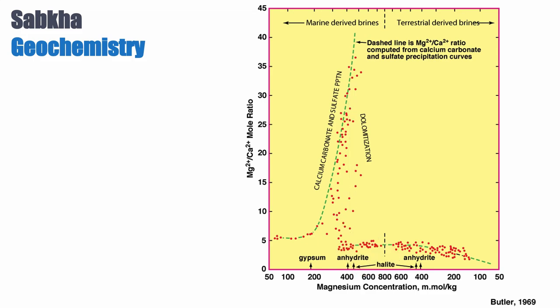Contrast this with the terrestrially derived brines — almost nothing happens, because they are chemically dilute. As you evaporate them, you concentrate whatever is in the water, but it's never enough to lead to any significant precipitation of carbonate, and certainly not dolomite. You might get a little bit of anhydrite and halite if you evaporate most of that water, but in terms of chemistry and mineralogy, the terrestrial sabkha is much less interesting.